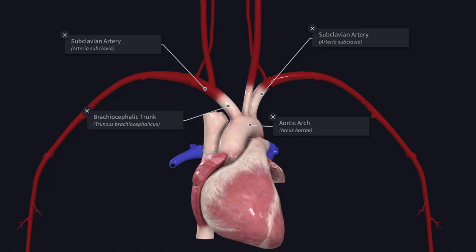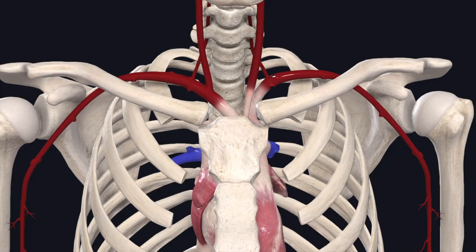The right subclavian artery arises from the brachiocephalic trunk, and the left subclavian artery arises from the aortic arch. Since the left subclavian artery arises from the aortic arch, it has two parts: a thoracic part and a cervical part. In this video, we will see only the cervical part of the subclavian artery.